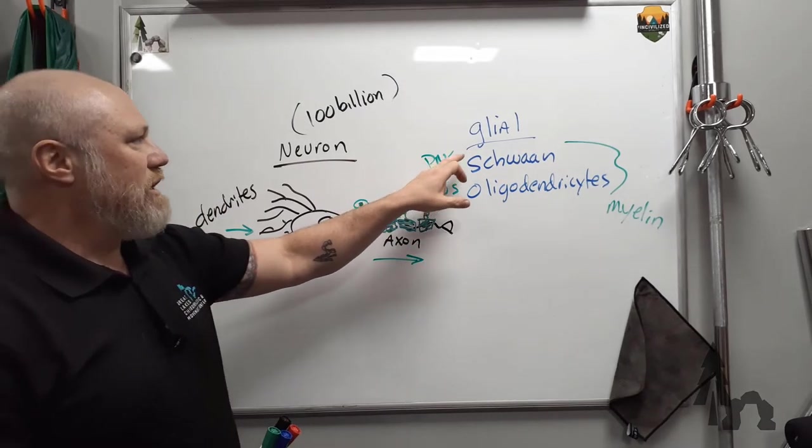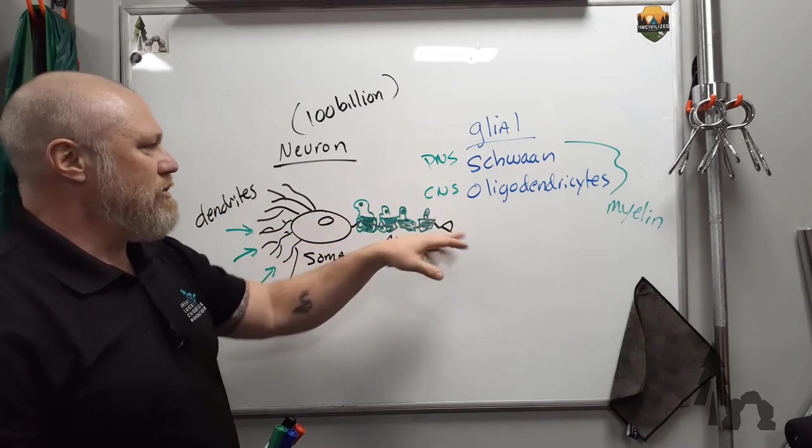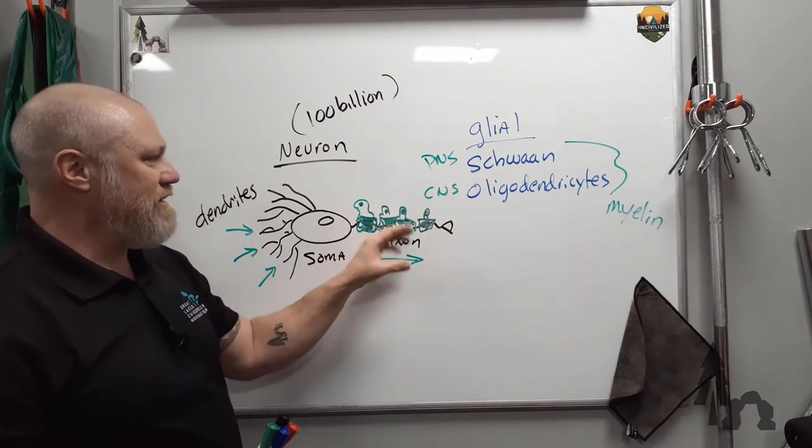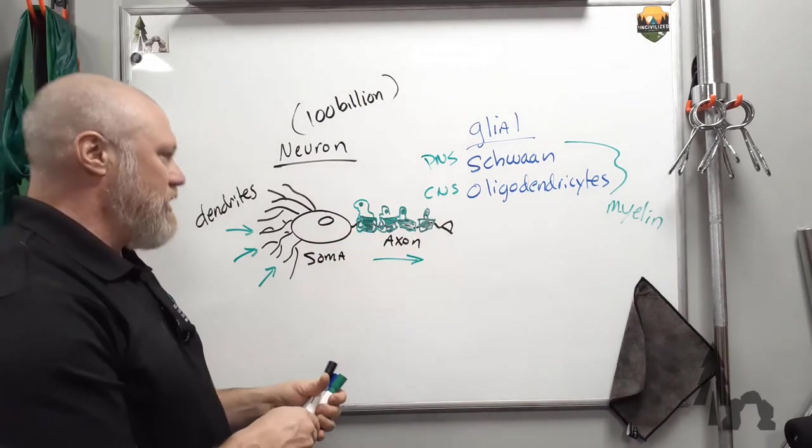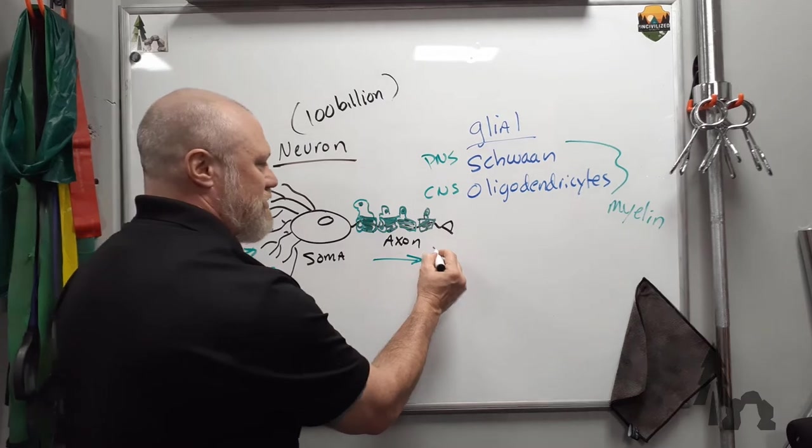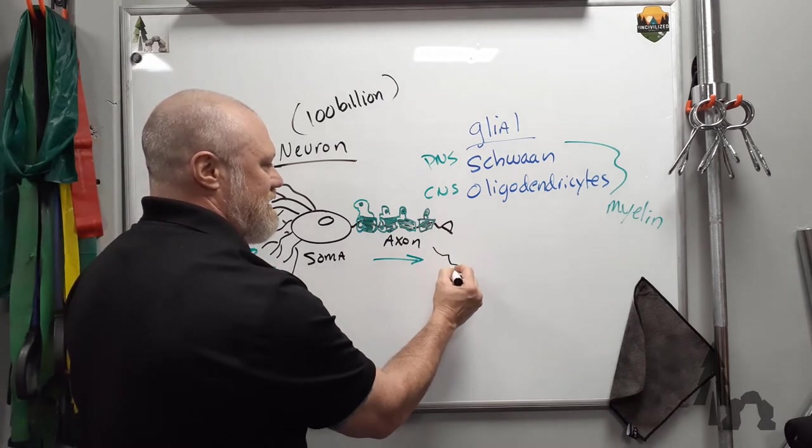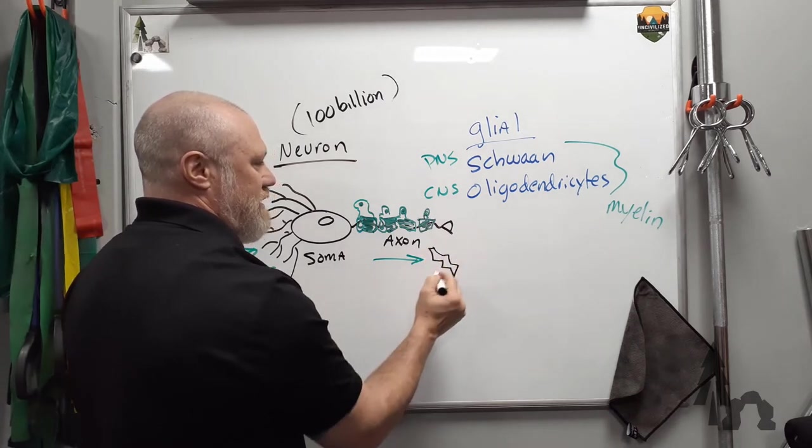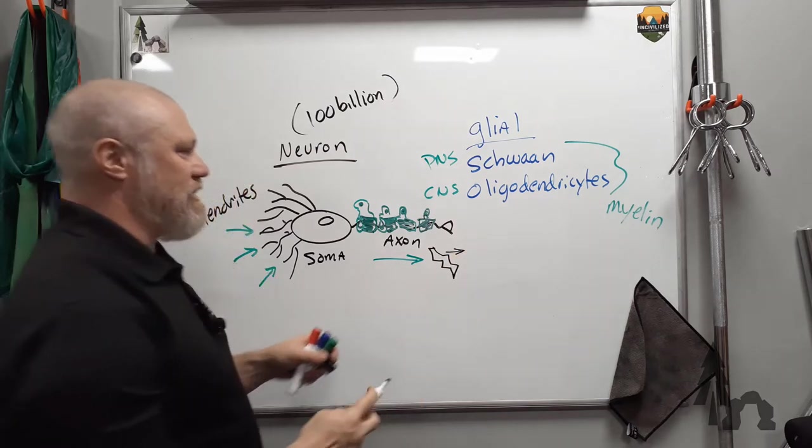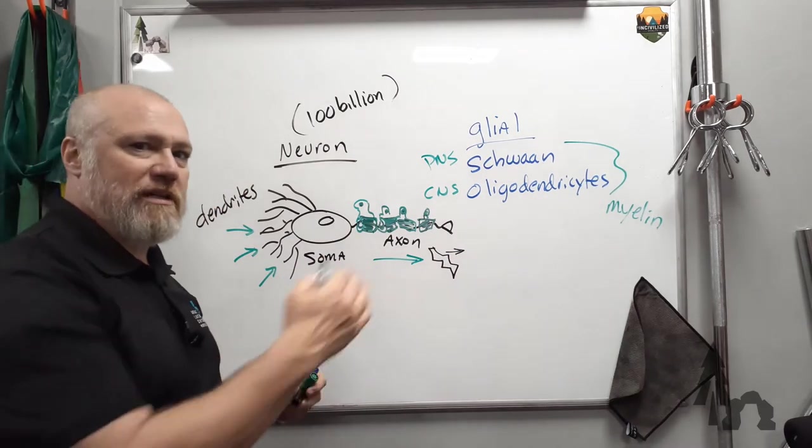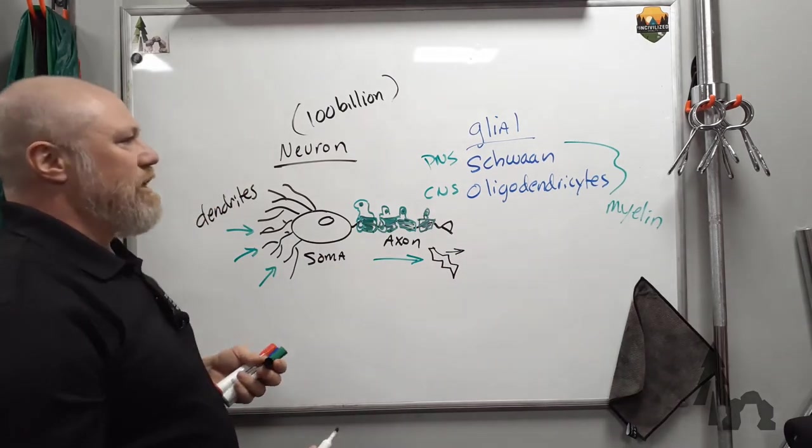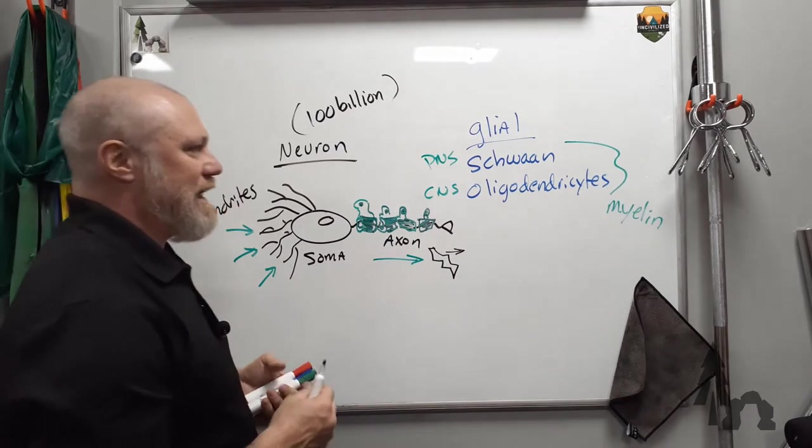But the glial cells, the Schwann or oligodendrocytes that produce the myelin, they protect and insulate your axon so that the little electrochemical signal that's being sent along the axon doesn't trip over or short-circuit and leak into other axons. Obviously, there's a lot more to myelination.